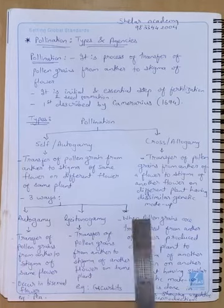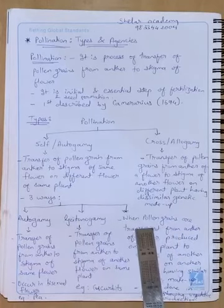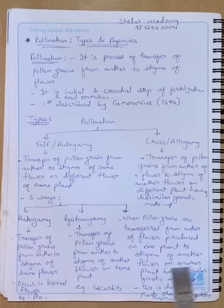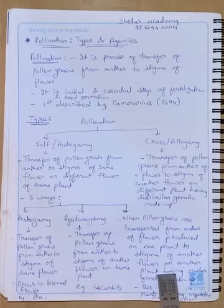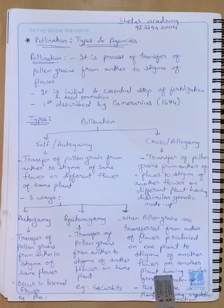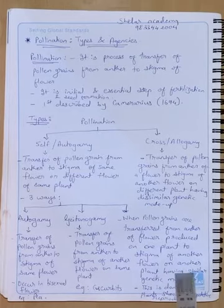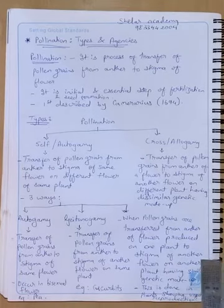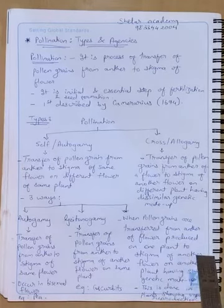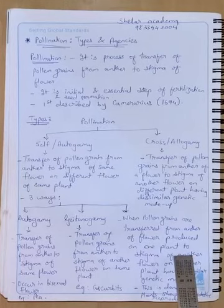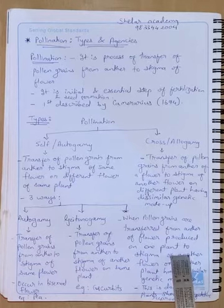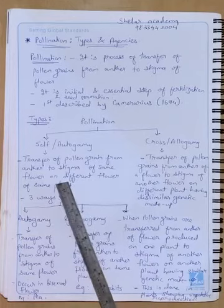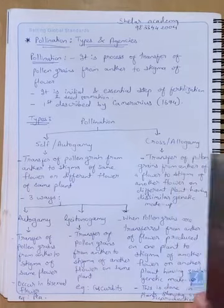The third possibility of self-pollination, which is slightly different, is when pollen grains are transferred from the anther of a flower on one plant to the stigma of a flower on another plant. However, the two plants have the same genetic makeup — both produced by vegetative reproduction. So genetically it still counts as self-pollination.